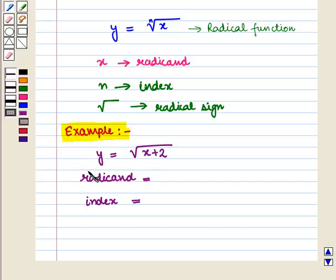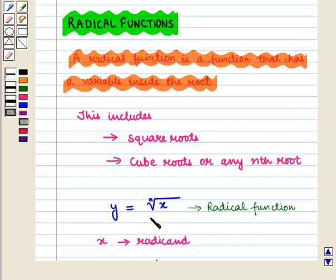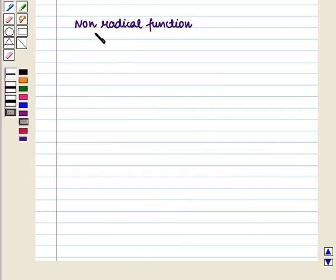For example, in y is equal to the square root of (x plus 2), the radicand is equal to x plus 2 and the index is equal to 2. We should note that a radical function does not include functions that contain only numbers inside the radical — the independent variable must lie inside the radical.